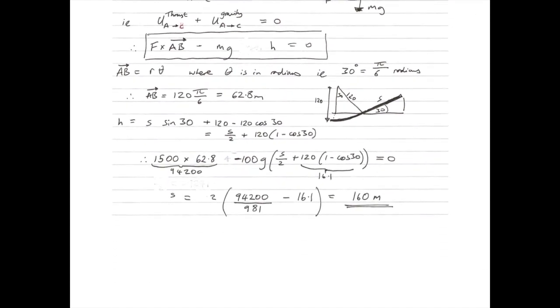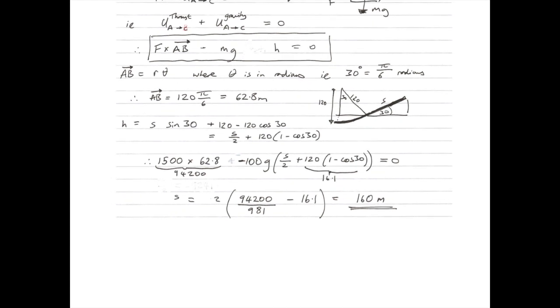And then finally, equating both work dones, so the work done due to the thrust and the work done, which is negative, due to the gravity. Equating them both to equal, because as we found out from the beginning, the total work done is zero. Then it can be rearranged to find S as the subject, where the other values are known, and then we can compute S to be 160 metres.